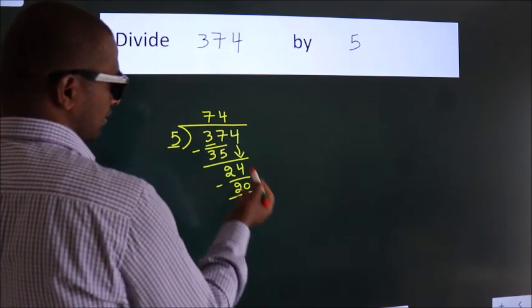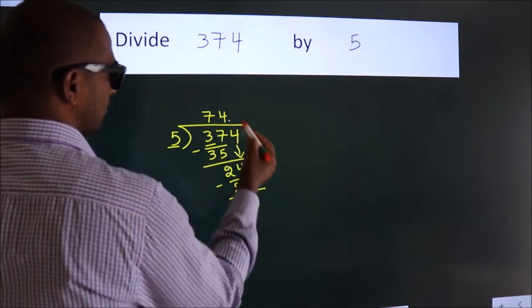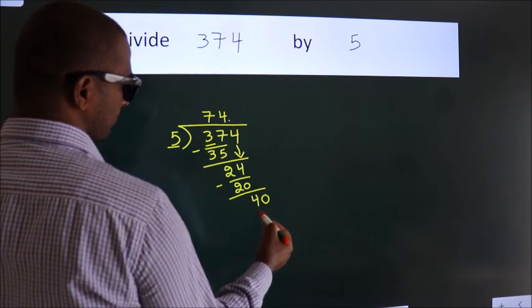After this, no more numbers to bring down. So what we do is we put a dot and take 0. So 40.